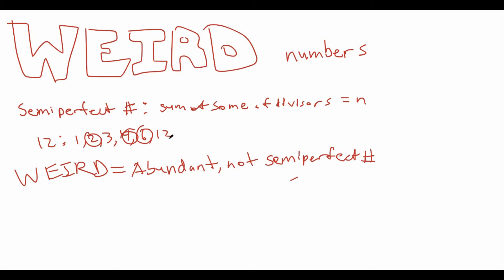So, we can see that 12 is an abundant number. We learned that from the last video. Except it's semi-perfect, as we can see right here, so it's not weird. It turns out the smallest weird number is 70.